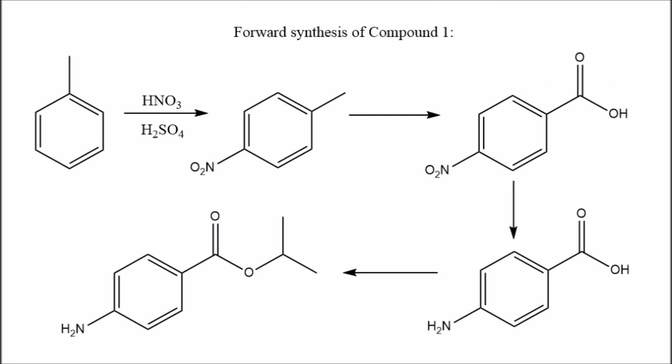All that's left now to complete the synthesis is selecting the perfect reagents, which is all down to how reactive we need them to be to carry out each step — such as selecting the very strong oxidizing agent potassium permanganate as our reagent for the oxidation of the methyl group to the carboxylic acid. And we have one complete synthesis for a relatively complex looking molecule.